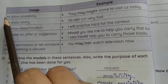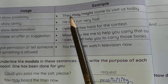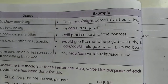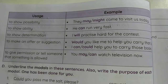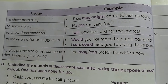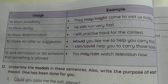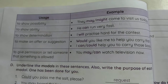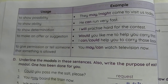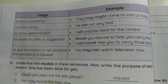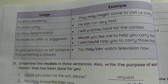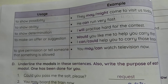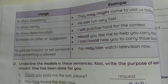Turning to page 52 — to show possibility, may and might are used. 'It may rain.' 'It might rain.' For remote possibilities, we use 'might'. To show ability: 'I can run, I can dance.' Can shows present ability; could shows past ability. Will shows determination — 'I will do it, I will make it.' Can and could are used to make an offer or suggestion. May and can are used to give permission.